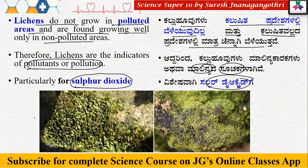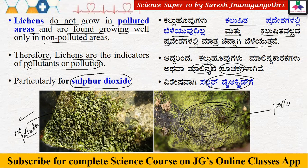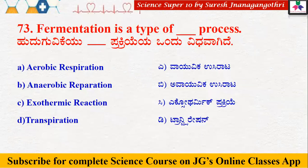Where there is no pollution, lichens grow well. In a polluted area, they do not grow. So this is the explanation: where there is pollution, lichens cannot survive, which is why they are used as pollution indicators. This is what is the explanation for this question.